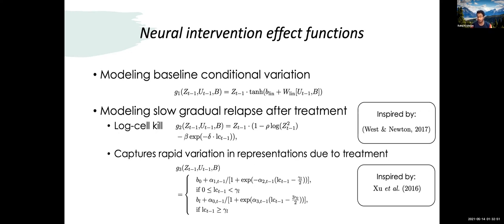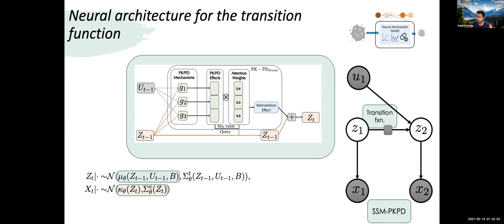We proposed three different neural architectures — G1, G2, and G3 — to model the effect of simultaneous interventions on latent representations, each capturing a different aspect of patient genetics or treatment behavior, inspired by different pharmacokinetic models. These are combined using an attention mechanism to create a single transition function mu. This model, incorporating domain knowledge from PKPD modeling and clinical treatment protocols, we call the SSM-PKPD.